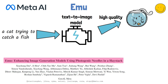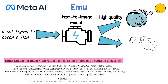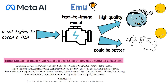However, it is not always easy to get high quality results from these models. In this illustration, for example, we can subjectively say that the second generation is less appealing. So here comes EMU, a text-to-image model which is quality-tuned to yield high quality results consistently.